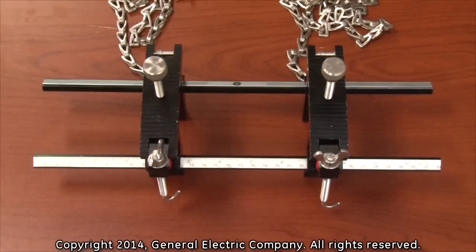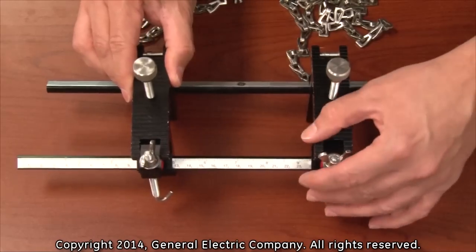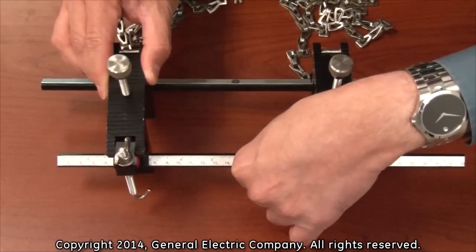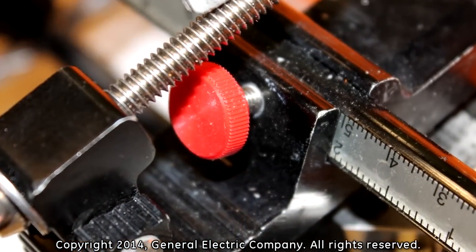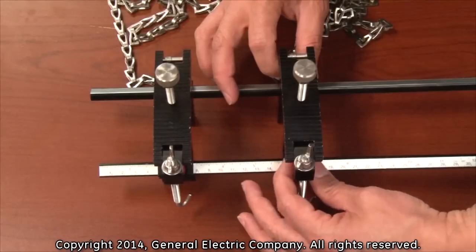The first step is to adjust the mounting fixture to the appropriate spacing. Separate the fixtures to be 4 inches apart according to the measurement scale on the fixture rail. Tighten the red screws to lock the fixtures in place.